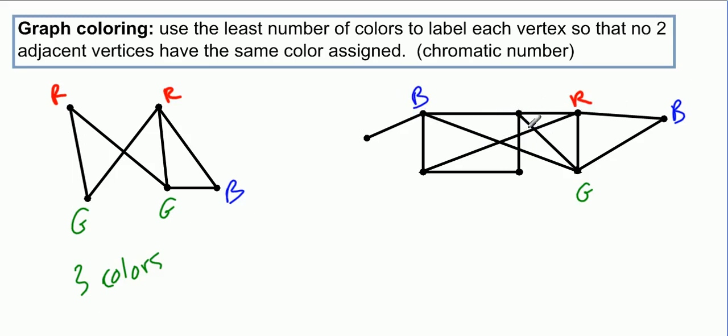Now when I get to this vertex right here in between the red and the blue, I can't color it red, I can't color it green because it's adjacent to this, and I can't color it blue. So I'm going to have a problem here. I'm going to have to introduce a new color. I'll go with purple because I'm not sure yellow would show up.